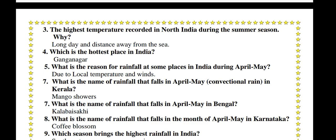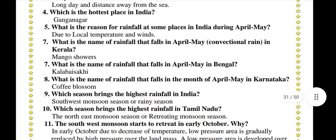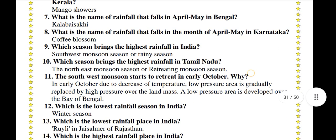What is the name of rainfall that falls in April-May in Kerala? Mango showers. What is the name of rainfall that falls in April to May in Bengal? Kalabaisakhi. What is the name of rainfall that falls in April to May in Karnataka? Coffee Blossom.